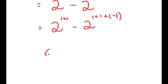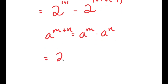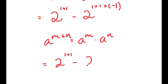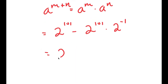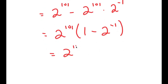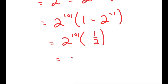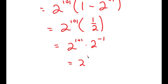Now, if I use that property again that states that a to the power of m plus n is equal to a to the power of m times a to the power of n, I get 2 to the power of 101 minus 2 to the power of 101 times 2 to the power of negative 1. And now if I factor out 2 to the power of 101, I get 2 to the power of 101 times 1 minus 2 to the power of negative 1, which is equal to 2 to the power of 101 times one half, which is equal to 2 to the power of 101 times 2 to the power of negative 1, which is equal to 2 to the power of 100.